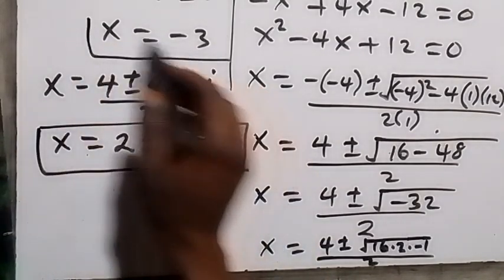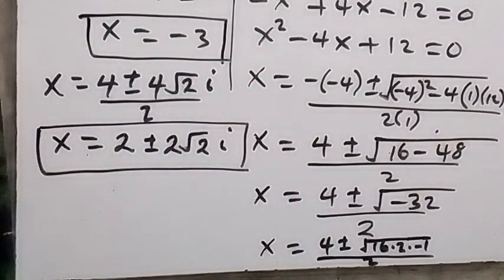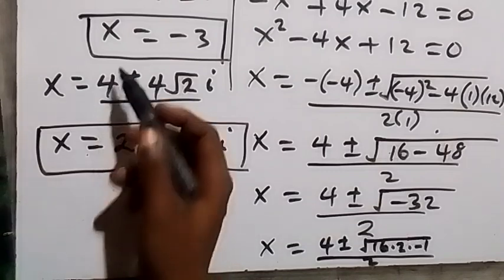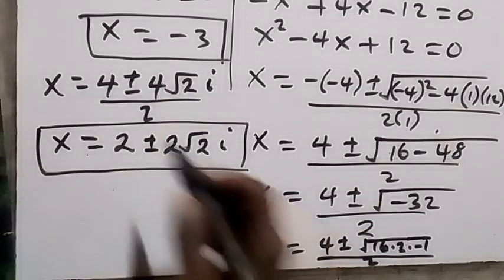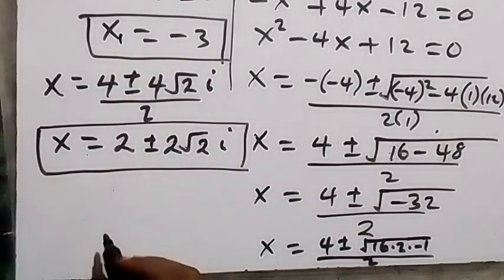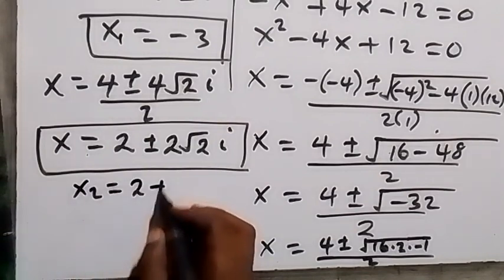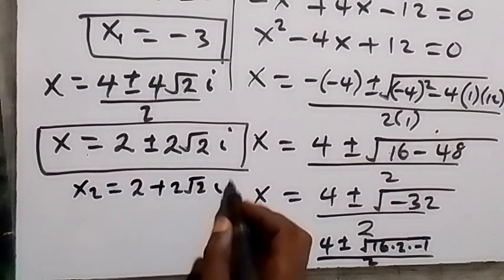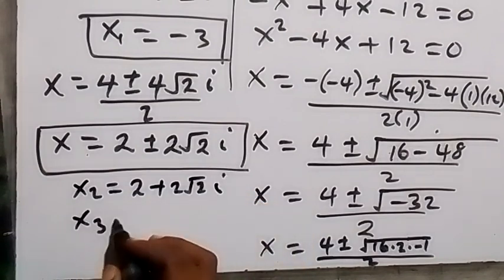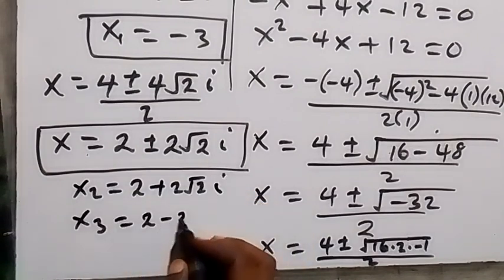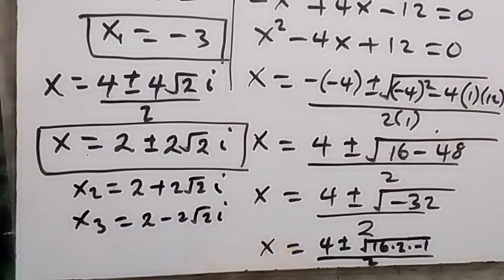So we have two complex values of x, and we also have x equals minus 3. Altogether we have three solutions: x₁ equals minus 3, x₂ equals 2 plus 2 root 2 i, and x₃ equals 2 minus 2 root 2 i. Thank you for watching — please share this video, subscribe to my channel, and see you next class. Bye for now.